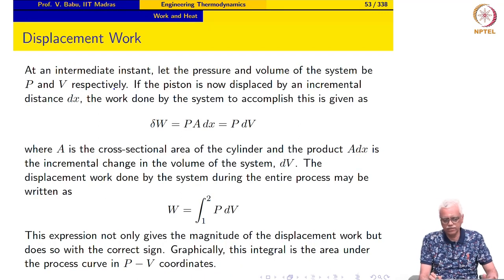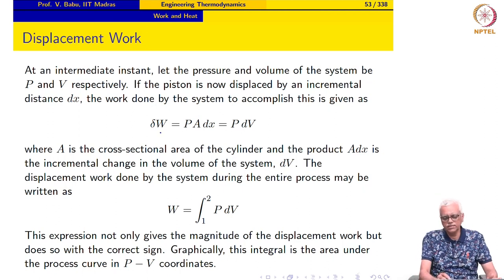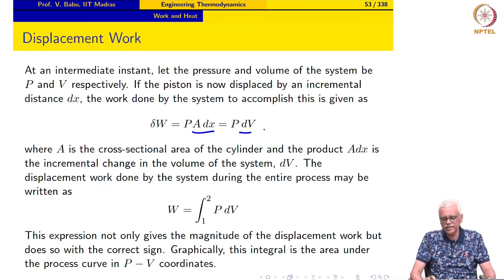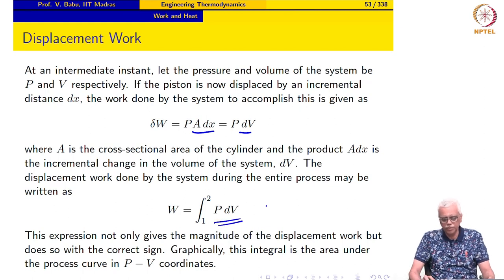We look at a simple piston-cylinder mechanism containing a working substance as our system. An external agent initially provides resistance; as resistance is slowly reduced, the piston moves outward and the system does work. At an intermediate instant when the pressure and volume of the system are P and V, if the piston is displaced upward by an incremental distance dx, the work done is δW = P·A·dx = P·dV. Integrating from the initial to the final state gives the familiar expression: W = ∫₁² P dV for displacement work.